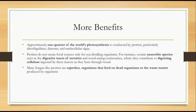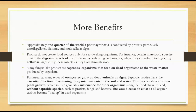There are also many fungus-like protists called saprobes — organisms that feed on dead organisms or waste matter — and they are decomposers. Many types of oomycetes grow on dead animals or algae. Saprobic protists have the essential function of returning inorganic nutrients to the soil and water. Without decomposers like protists, fungi, and bacteria, all organic carbon would become tied up in dead bodies and life would eventually cease to exist.